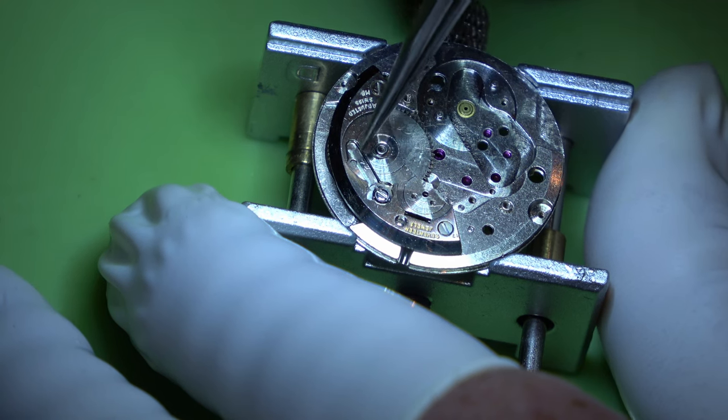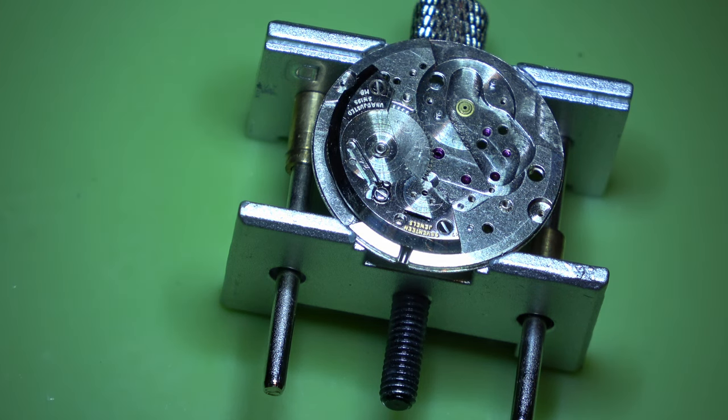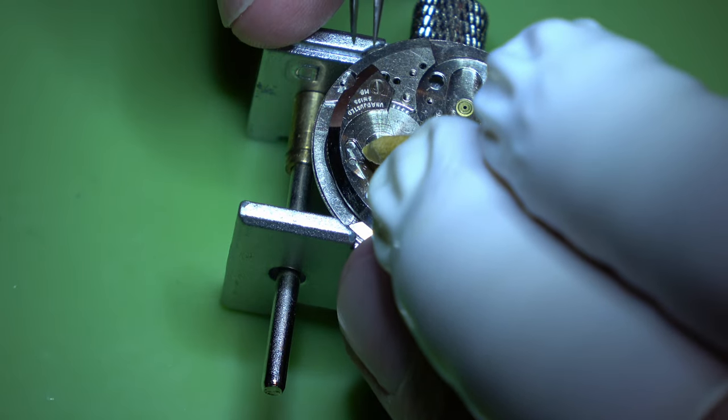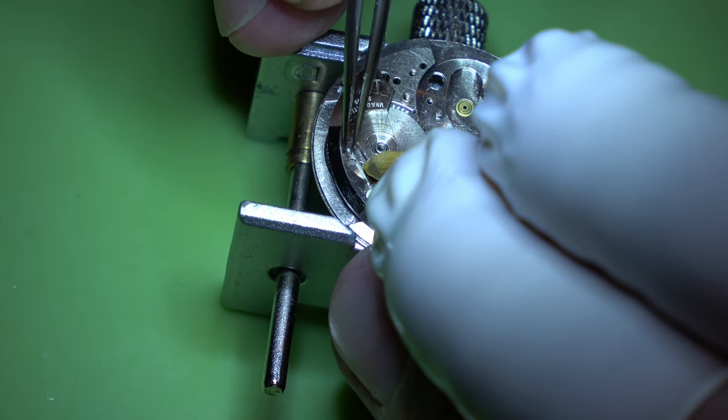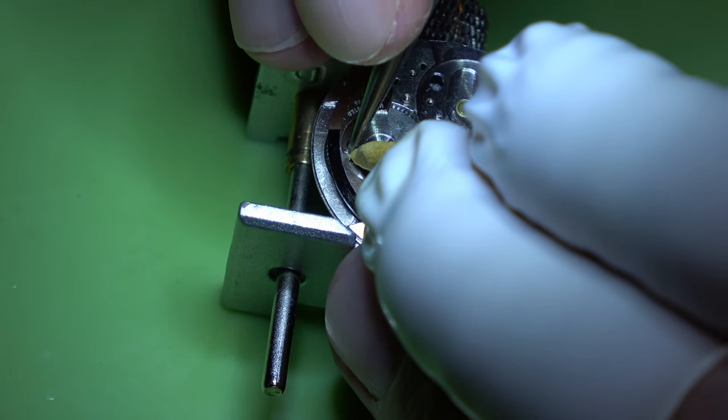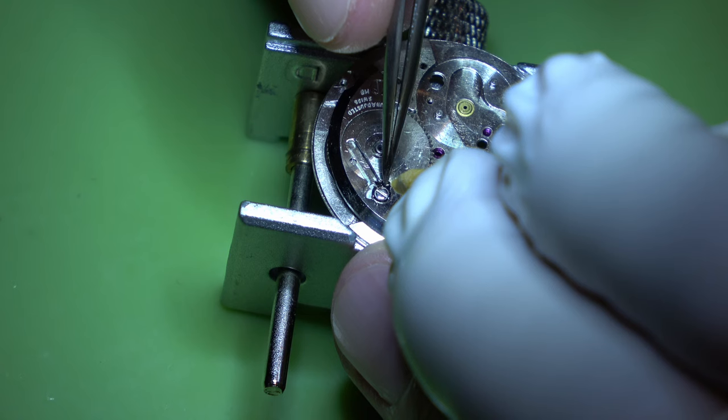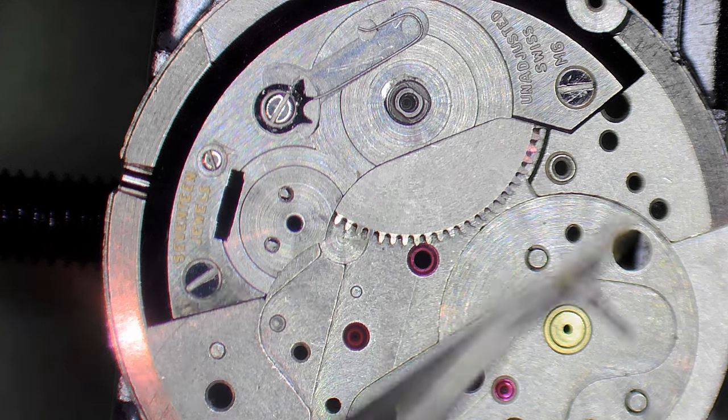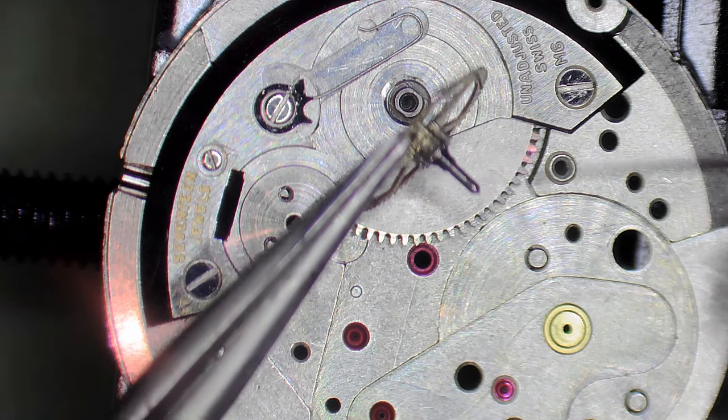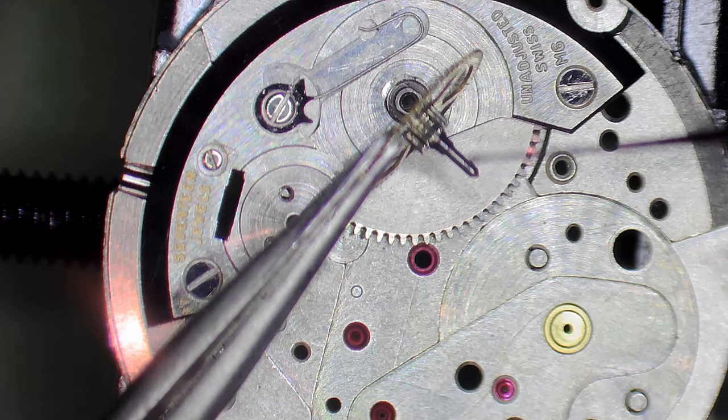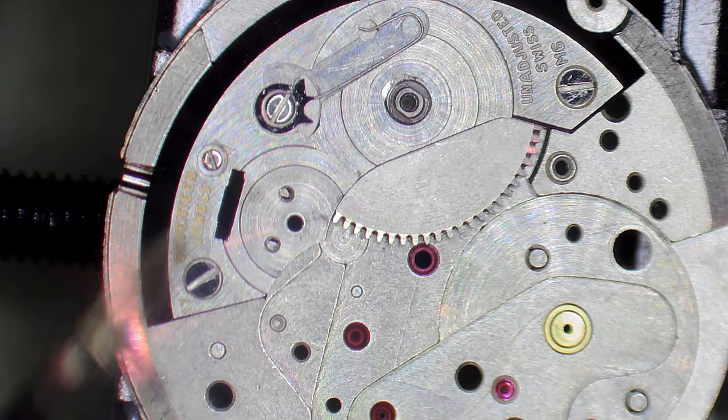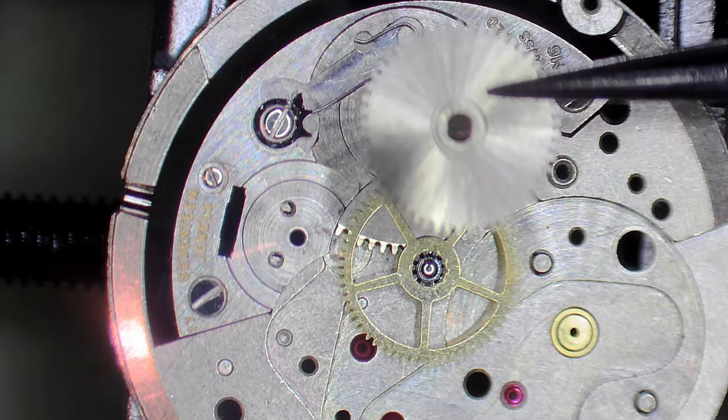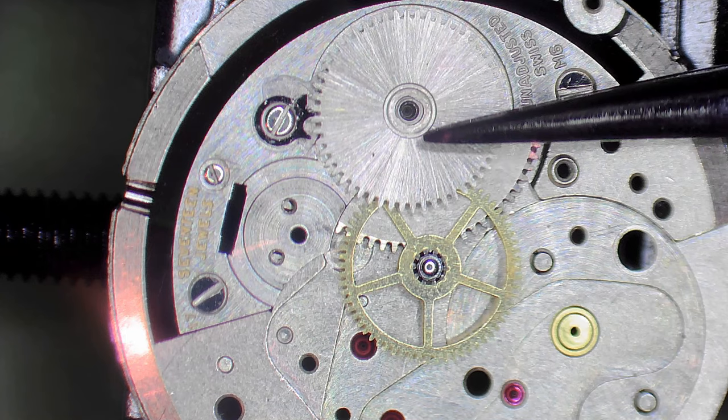Again these are the parts that do go flying. So you always want to hold it down with a bit of pegwood or a bit of rodico or something like that. What I would say is use pegwood when you're installing it and use a bit of rodico when you're taking it out. Otherwise if you use rodico when you try to put it in you can sometimes pull it back out. Now we're going to put the centre wheel in and pop a bit of oil on the stem there.